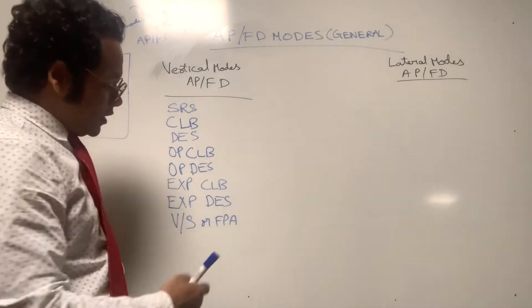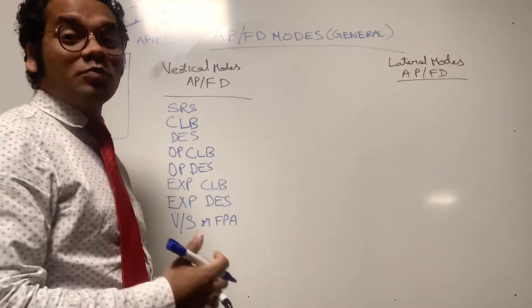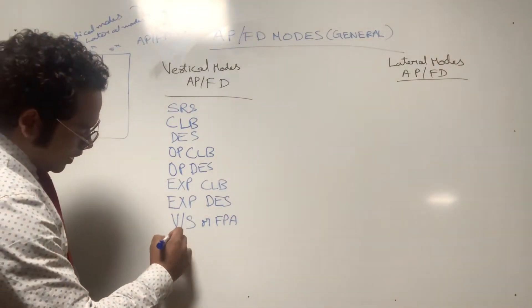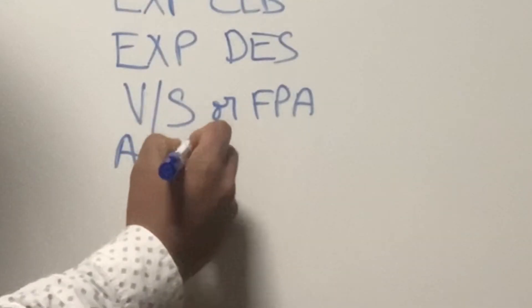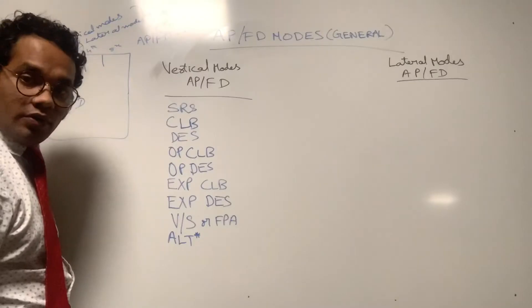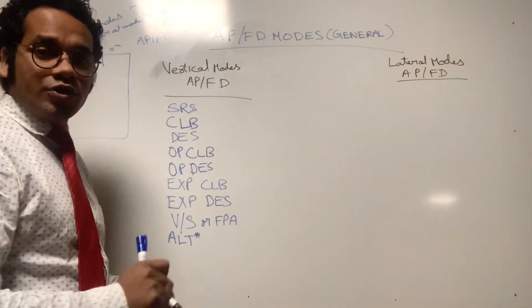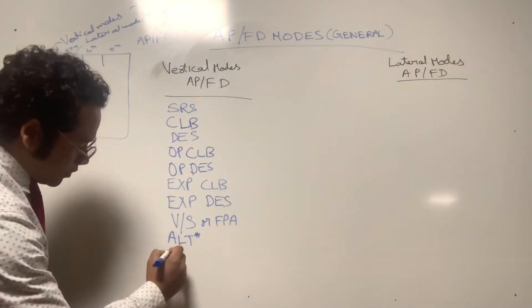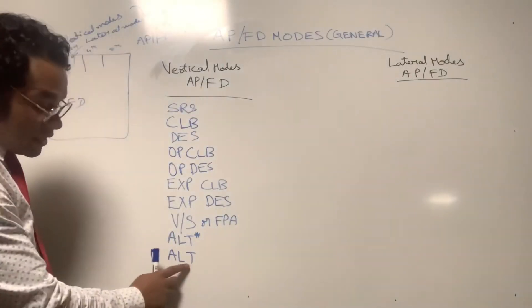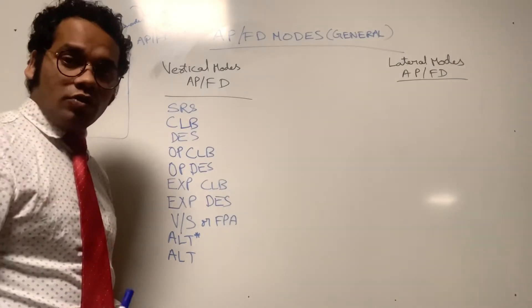Next is VS mode or FPA mode. VS is the vertical speed mode and FPA is the flight path angle mode. Both of these are also called basic modes. Next we have ALT*, which is the altitude capture mode.